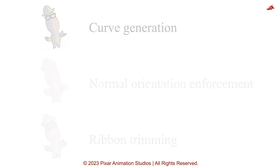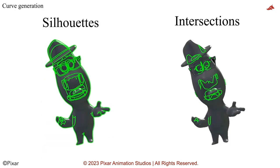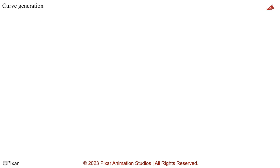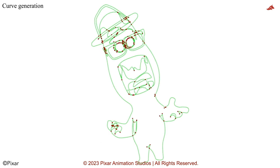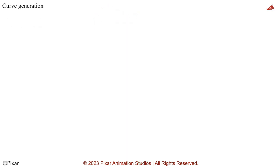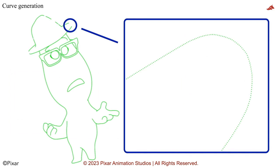To begin culling the contours, we start with silhouette and intersection curves generated from the camera viewpoint. If we remove the occluded curve points with the single-ray visibility test, there are gaps in the lines. To solve this problem, our method uses 2D chopping to determine curve sections delineated by sharp angles and intersections. Then, a calculated visibility probability is used as a metric for showing the points in these sections.